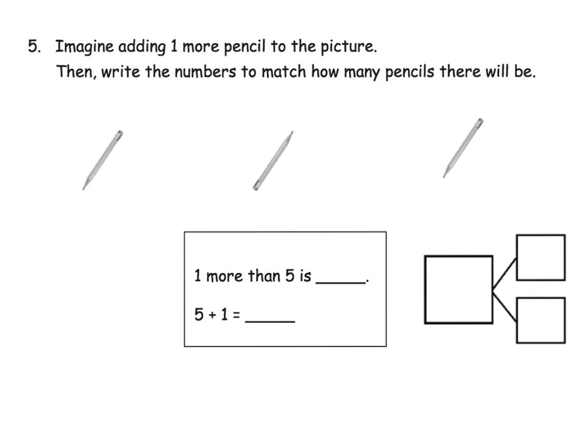Now I chose this one. This is the final problem in this slide. I chose this one not because it was hard, but because I think I see a typo. So the question says imagine adding one more pencil to the picture. Then write the numbers to match how many pencils there will be. So down here they're saying one more than five is... Well that tells me there really probably should have been five pencils to start with.